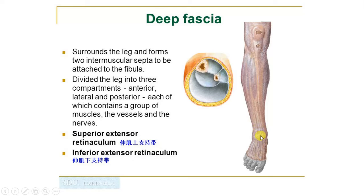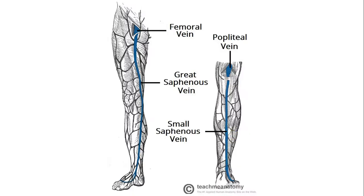These are named extensor retinacula, despite lying anteriorly, because they cover those structures that dorsiflex or extend the foot — hence superior extensor retinaculum and inferior extensor retinaculum. Now, discussing superficial structures, the main superficial veins are the great saphenous vein and the small saphenous vein.